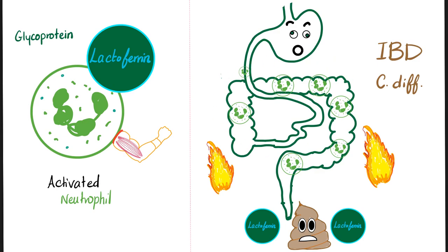Anytime you have acute inflammation, you have neutrophils. If you have tons of neutrophils, they will have tons of lactoferrin. Eventually, everything in your bowels will end up in the stool. So if you measure the lactoferrin in the stool and find it elevated, it means there are many neutrophils in the bowel — there is something inflammatory going on. Easy peasy.